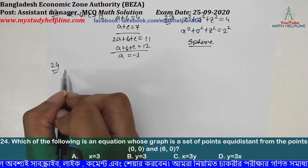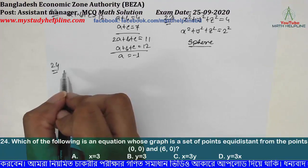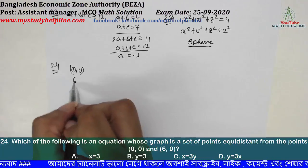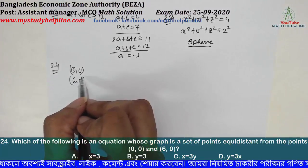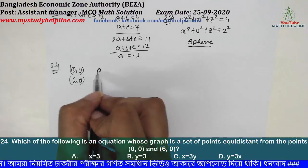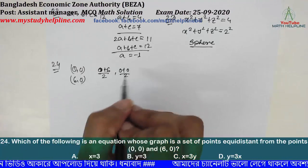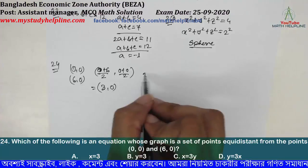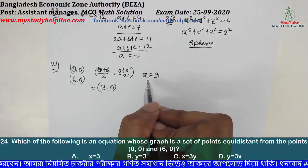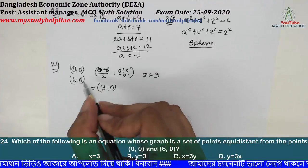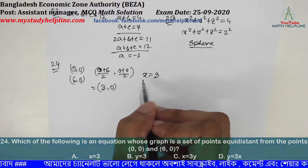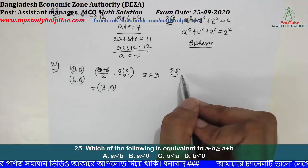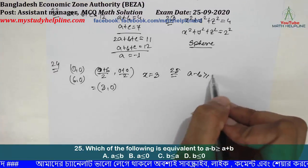Which of the following is an equation whose graph is a set of points equidistant from the points (0, 0) and (6, 0)? We will form the equation. The answer is x = 3, which is the perpendicular bisector of the segment joining those two points.